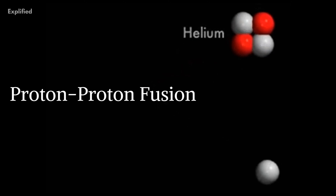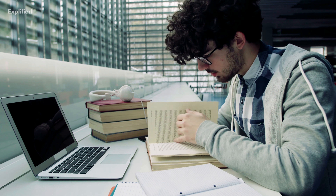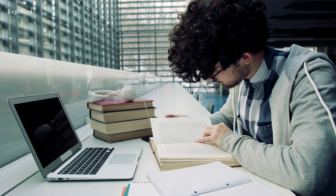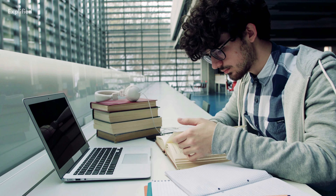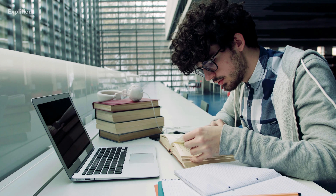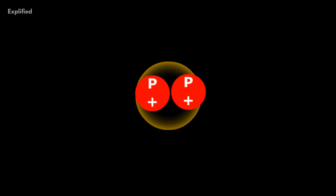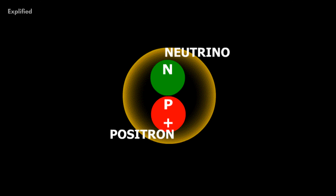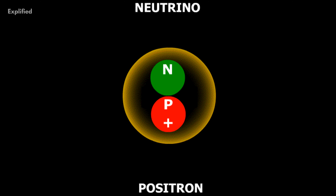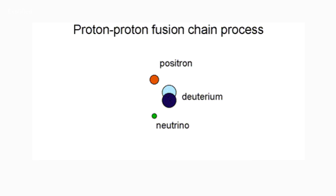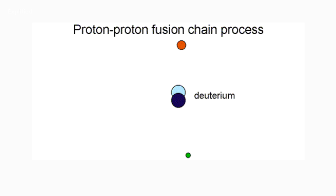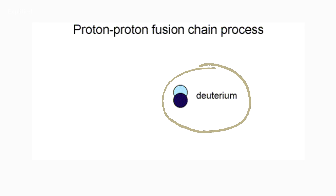This process occurs in three main steps. In the first step, two protons will combine and one of them will be converted into a neutron via the weak nuclear force. This neutron will form the heavy nucleus of a special type of hydrogen known as deuterium.